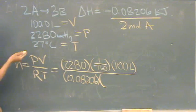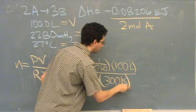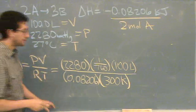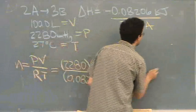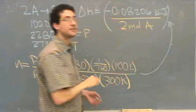R is 0.08206. Temperature is 27 plus 273. Multiply this out, take this quantity and multiply by this quantity to get your answer.